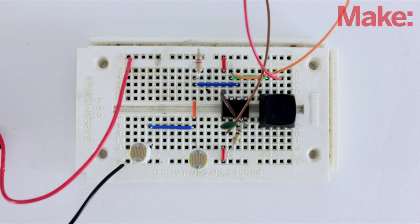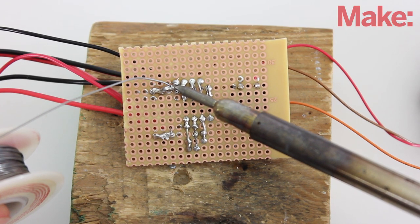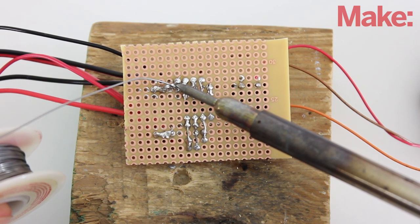You may have to use some trial and error to select components that are appropriate for your lighting conditions. Once the circuit was working properly, I soldered the parts onto a piece of perf board.